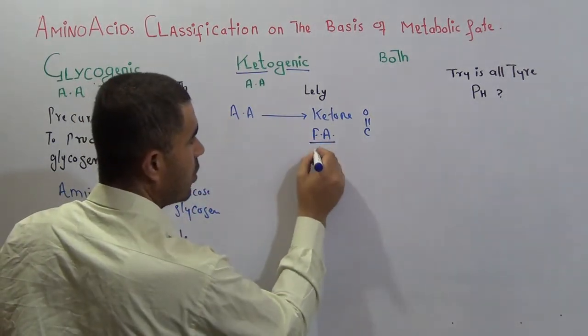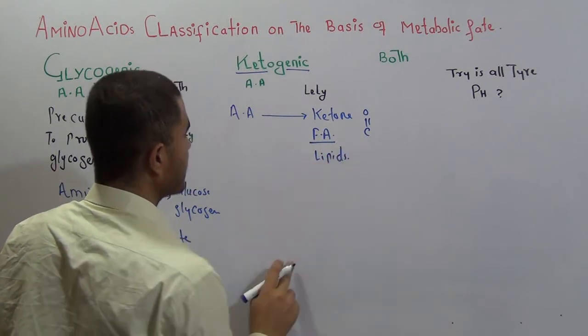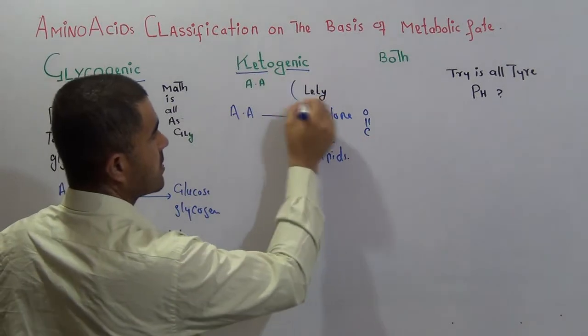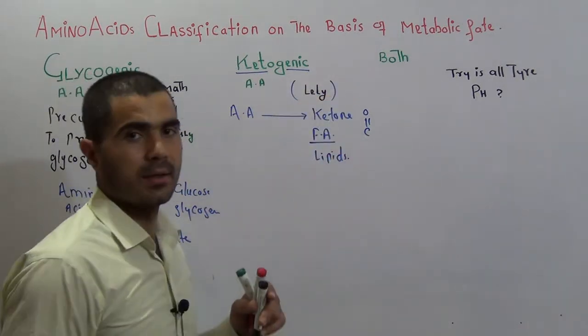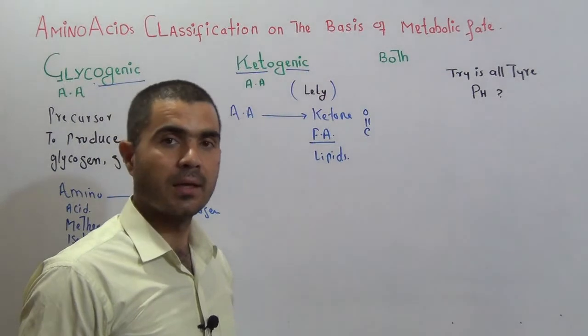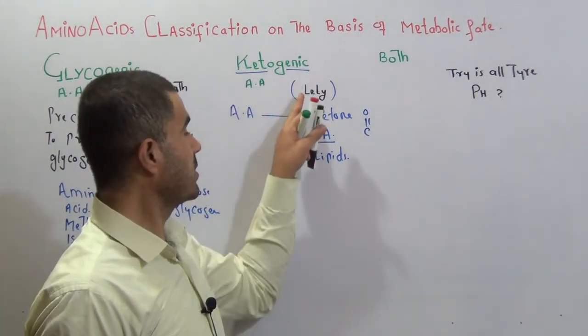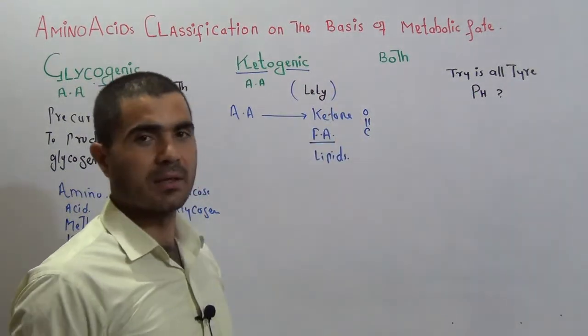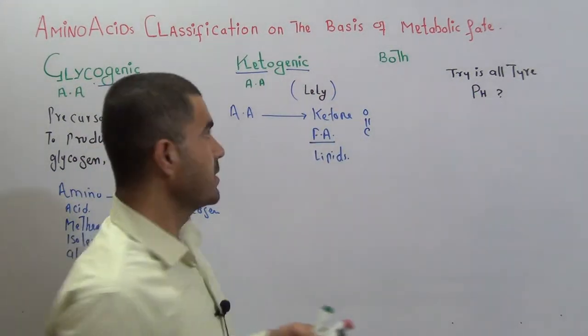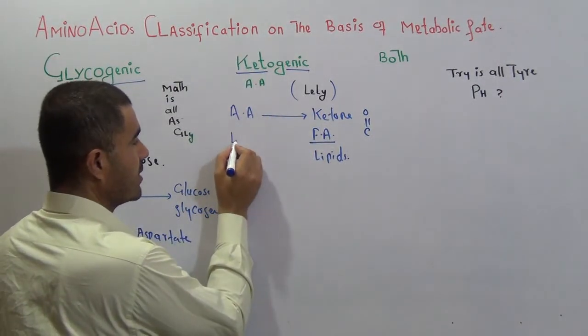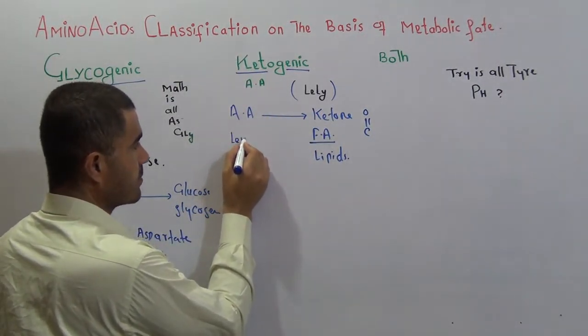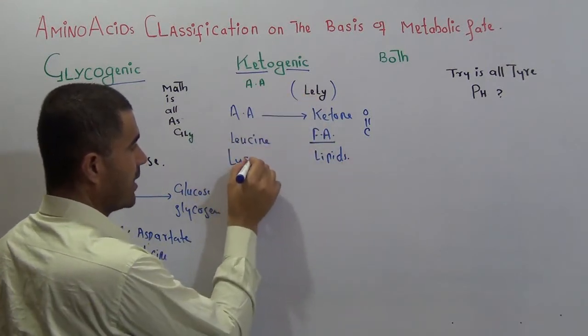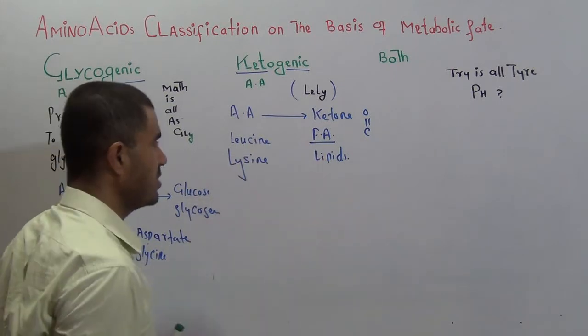Now what are those amino acids? I have just mentioned here lily. Lily is a flower, L-I-L-L-Y, lily, but you can write L-E-L-Y, lily, and lily can be the name of your friend. So what? L stand for leucine, leucine, and L-Y stand for lysine. So leucine and lysine, these two are ketogenic amino acids.